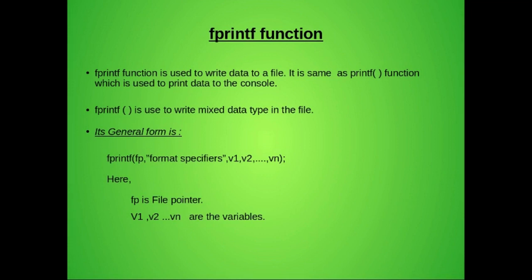Its general form is fprintf, and we pass three parameters to the function. The first parameter is fp, which is the file pointer. The second parameter is the format specifier corresponding to the variable list in the third parameter.